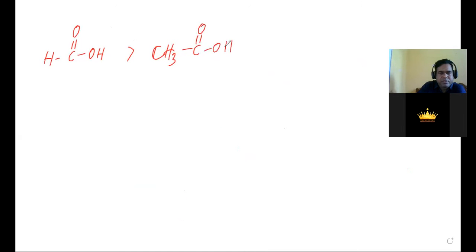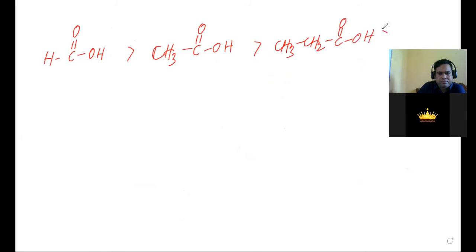The order of acidity for aliphatic carboxylic acids is: formic acid > acetic acid > propionic acid. The more the +I group, the less the acidic nature.